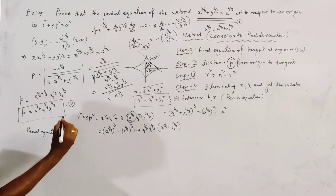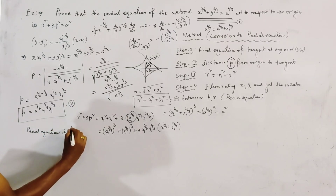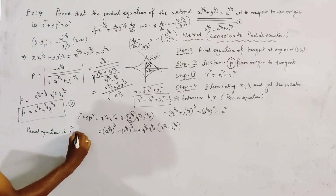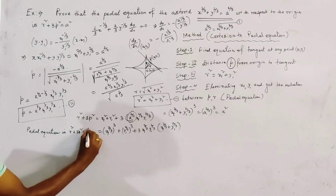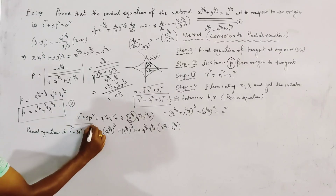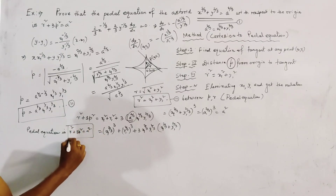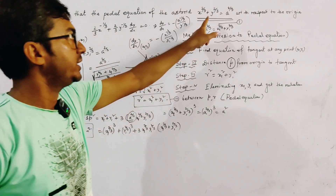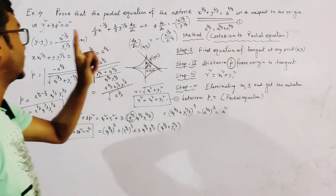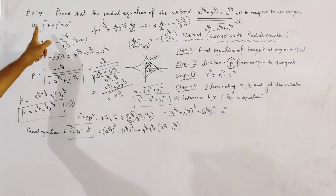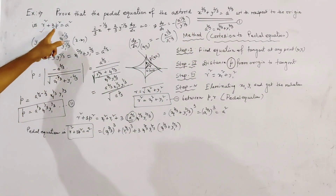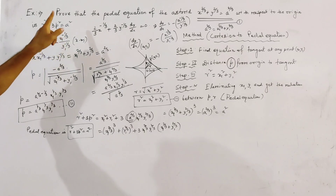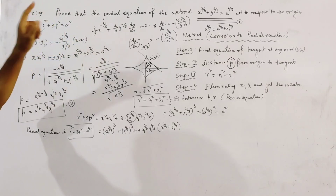This is equal to a². So we have proved the pedal equation of the asteroid: r² + 3p² = a².